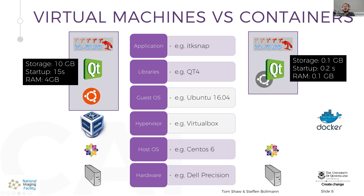With containers, you still start on the hardware with your operating system, but then you have the Docker daemon. Docker tries to reuse a lot of things from the operating system below — you only add the stuff you don't have in your container: just the libraries you're missing and then the application. Because you only add what you don't have yet, you end up with a much smaller image — say 0.1 gigabyte for ITK snap. Also, because there's no extra overhead, startup is very fast — around 0.2 seconds — it feels like the application is installed natively. You're using the operating system you're already on, so you don't need a lot of memory. That's the difference between virtual machines and containers.